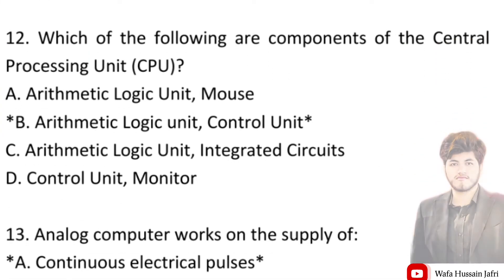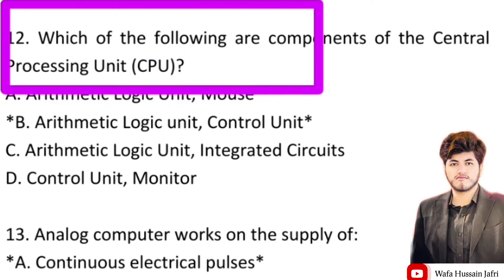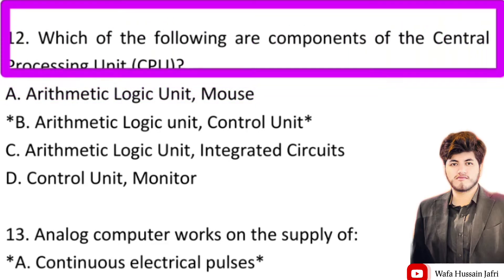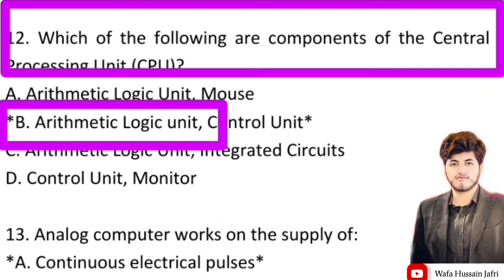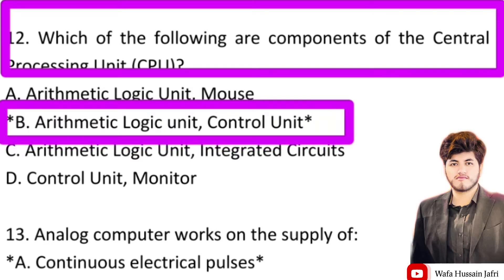The next important most repeated question is: which of the following is a component of the central processing unit? There are different options and option B is the correct one — arithmetic logic unit or control unit.